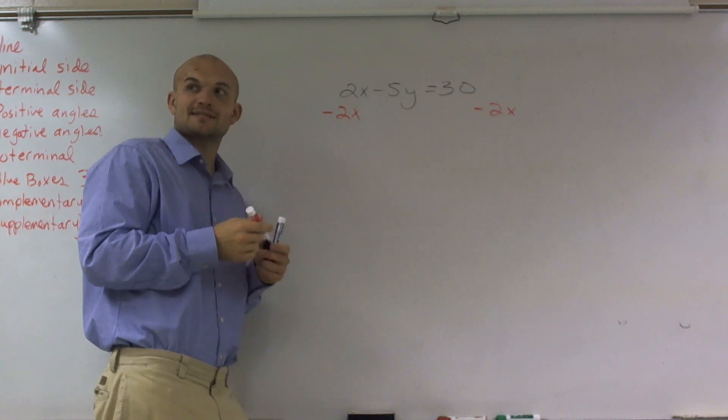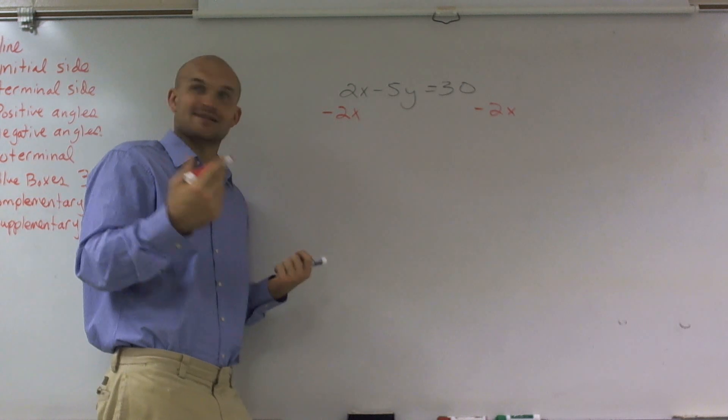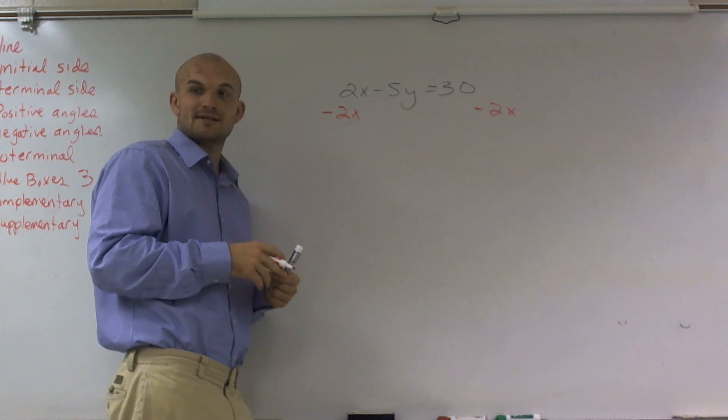All right, so 2x minus 2x is going to give me 0x. It's 0 times x is 0, 0 minus 5y is negative 5y.